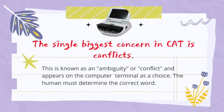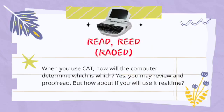For example, consider the word 'read': the outline uses initial R, long E, and final D. This outline has two words that could be associated with it — 'read' (R-E-A-D) and 'reed' (R-E-E-D). When you use CAT, how will the computer determine which is which? You may review and proofread afterwards, but in real-time transcription there is no time for that.